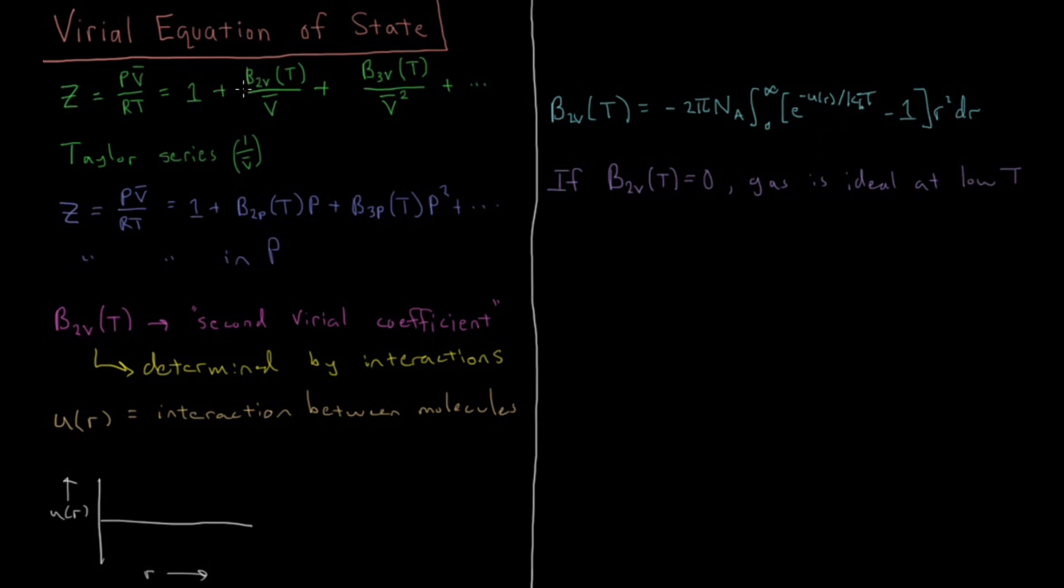Now, why is that? Well, at low temperatures, only the first term in this Taylor series is really going to matter. So only the second virial coefficient is really going to matter until P squared or one over molar volume squared, until those start to become significant. And if these numbers are very small, then the square of them is going to be very small. So at low pressures and at very high molar volumes, only the second virial coefficient is going to matter.